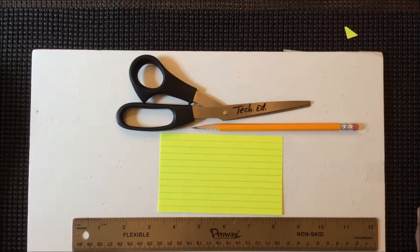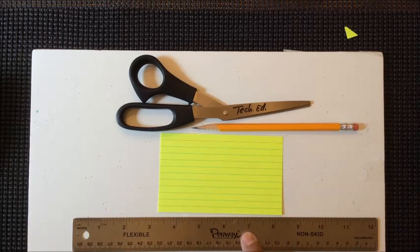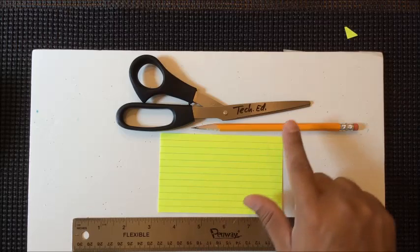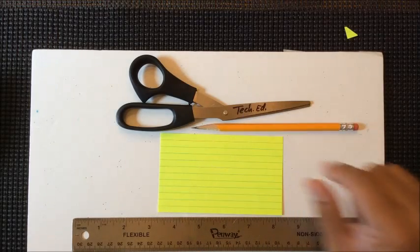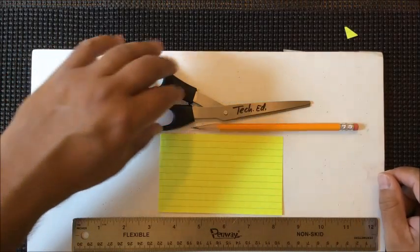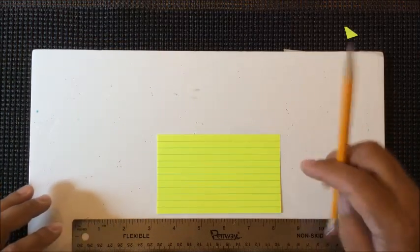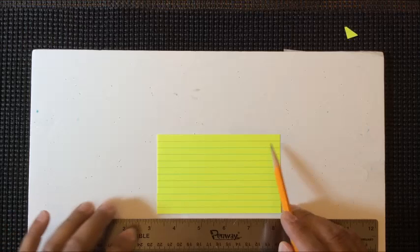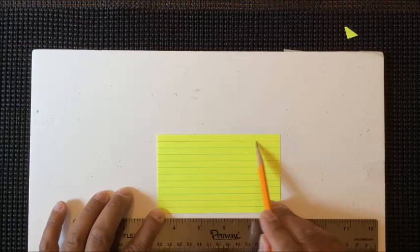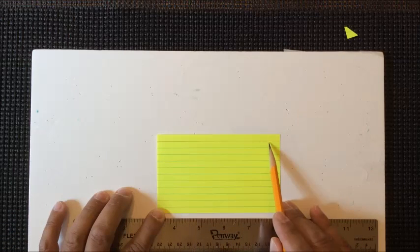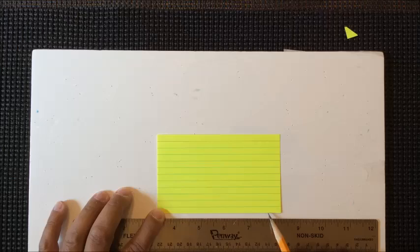The supplies you're going to need for the gusset layout will be a ruler, a note card, pencil, and eventually a pair of scissors to cut the gussets out. For right now, we're going to begin the layout by starting at the bottom edge of your note card. Normally note cards have a red line and that's usually indicated as the top part of the note card. So we're going to start on the opposite end.